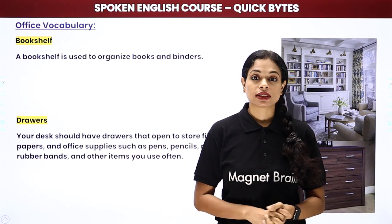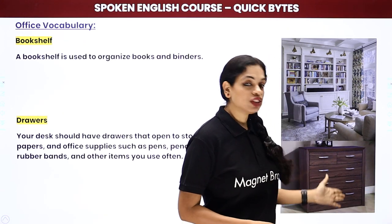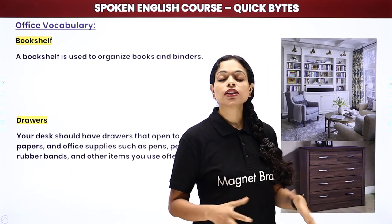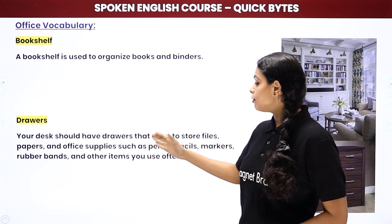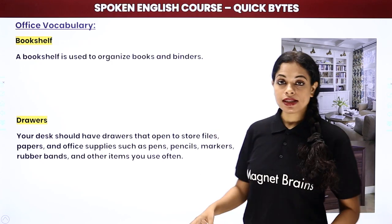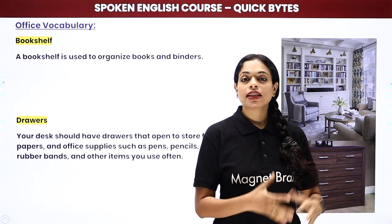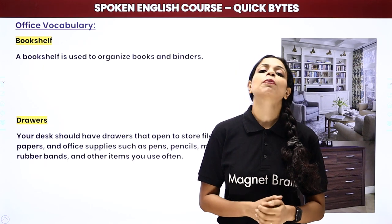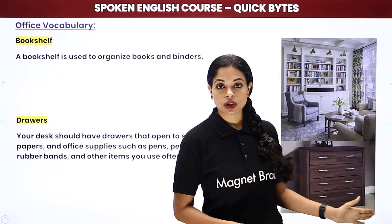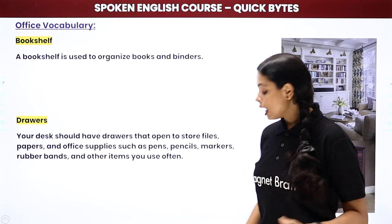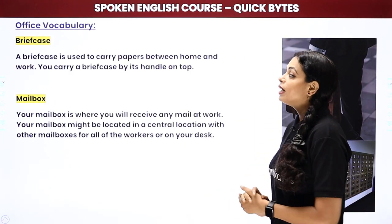Then we have drawers — these are also called a chest. If a cupboard has many drawers, we call it a chest. Your desk should have drawers that open to store files, papers, your stapler, stationery supplies, and personal items. Offices have desks with many drawers that you can use.